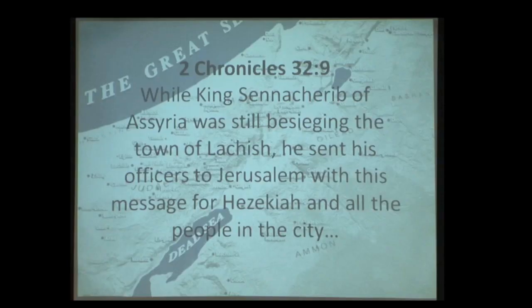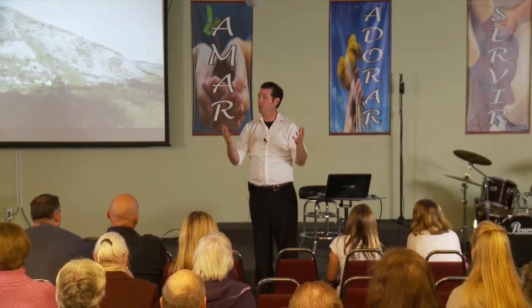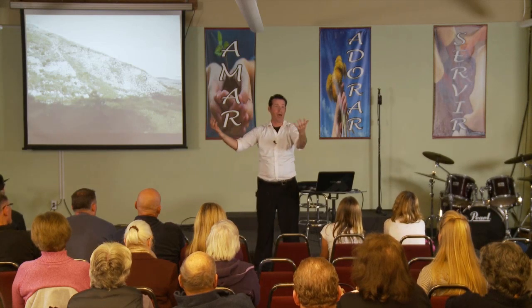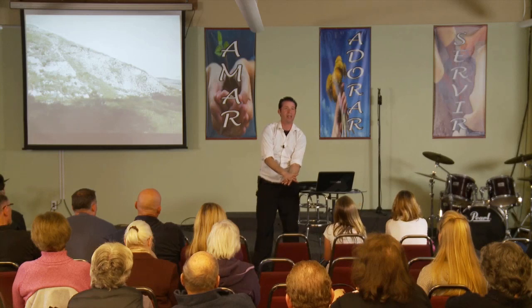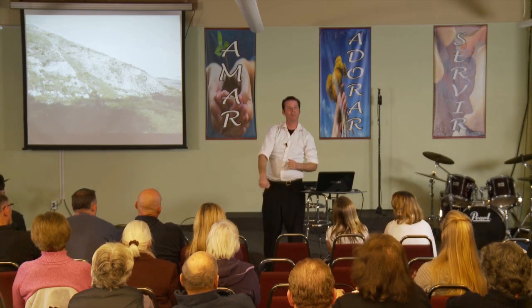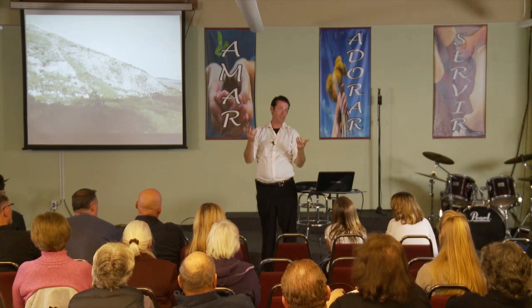The Bible says Sennacherib besieged Lachish — so it must be true. And when archaeologists come to Lachish, what do they find? In the world of the Bible, there are a few ways to conquer a city: set it on fire — like Jericho, the word being 'shoach,' a whole burnt offering (the word for holocaust); destroy it by water if it's next to a river, like Nineveh in Nahum chapter 2; or conduct a siege — the least favorable way, since you just wait until the people inside starve.